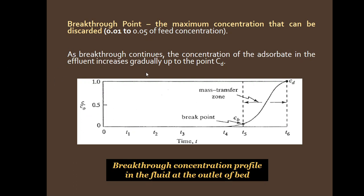As breakthrough continues, the concentration of the adsorbate in the effluent increases gradually up to point C_D. This is the remaining mass transfer zone after the breakthrough point, where we are allowed to discard the fluid because what remains is just 1 to 5 percent of the feed concentration. This is our breakthrough profile — the concentration profile of the fluid at the outlet of the bed.